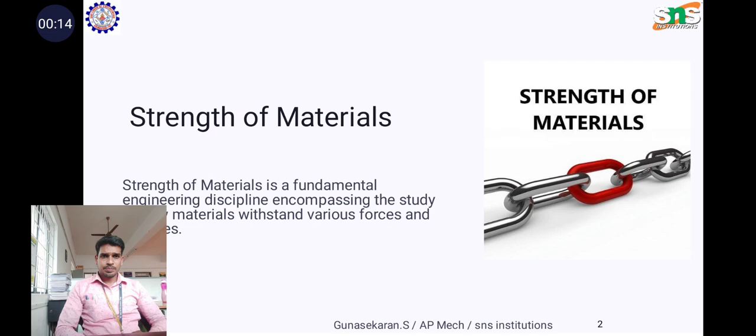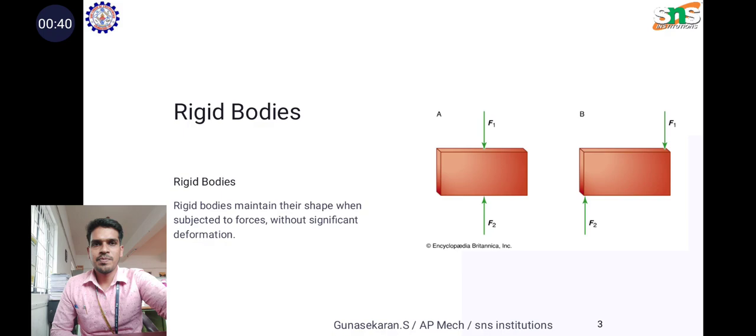First of all, strength of material. In the strength of material, it is the ability to withstand an applied load without failure or plastic deformation. The field of strength of material deals with forces and deformation that result from the acting on a material.